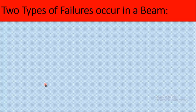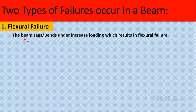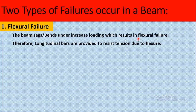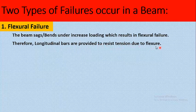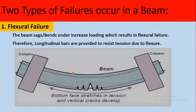There are two types of failures that can occur in a beam. The first one is flexural failure. The beam shakes or bends under increased loading, which results in flexural failure. Therefore, longitudinal bars are provided to resist tension due to flexure — their main purpose is to provide resistance against tension due to bending. As you can see in this picture, longitudinal cracks from flexural failure occur in the central span of the beam, with cracks appearing in the middle section. To avoid these cracks, longitudinal bars are provided.